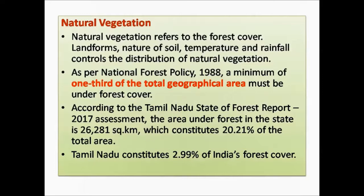All the forests do not have the same varieties of plants and trees. They differ according to the landform, nature of soil, temperature and rainfall. These are the factors which control the distribution of natural vegetation. As per National Forest Policy 1988, a minimum of one third of the total geographical area must be under forest cover — that is, about 33% of a state must be forest.